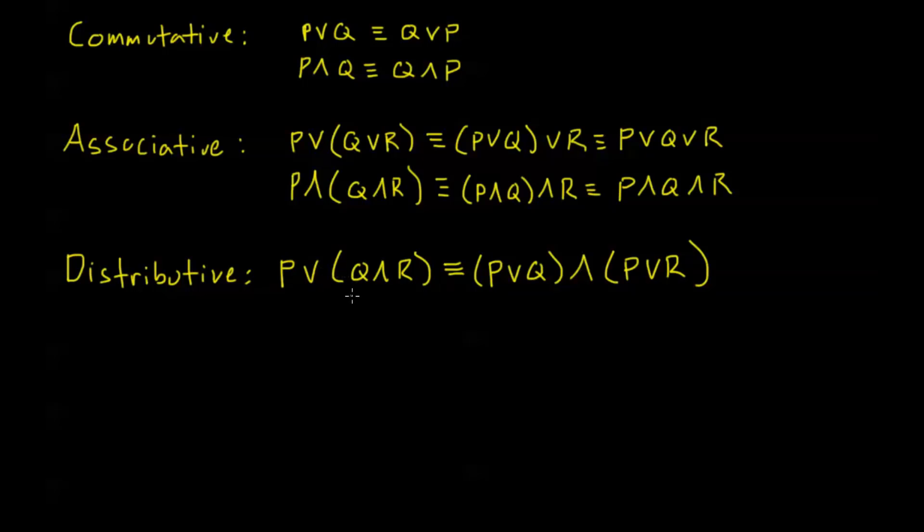Now why is this true? Well, on this left-hand side, this is going to be true if P is true or if both Q and R are true. And otherwise, it'll be false.